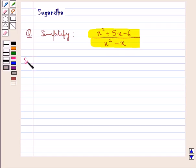Let's proceed with the solution now. We are given the algebraic fraction x square plus 5x minus 6 upon x square minus x and we need to simplify this algebraic fraction. For this, first of all we will factorize the numerator and the denominator.